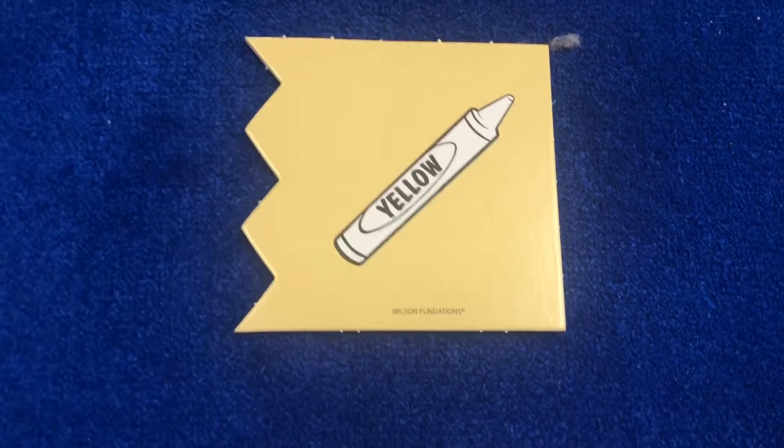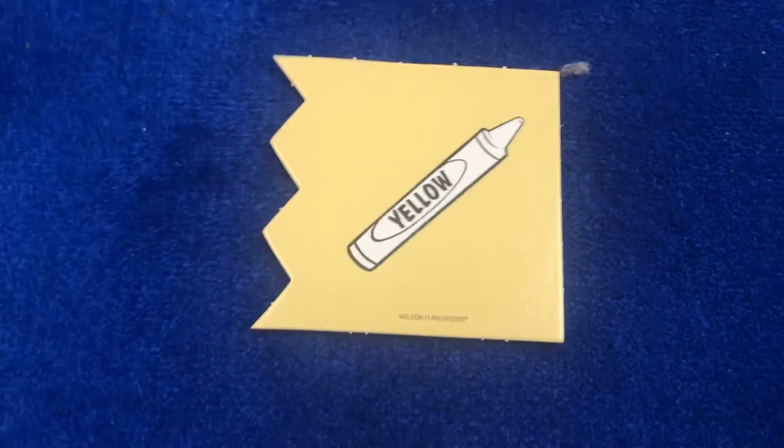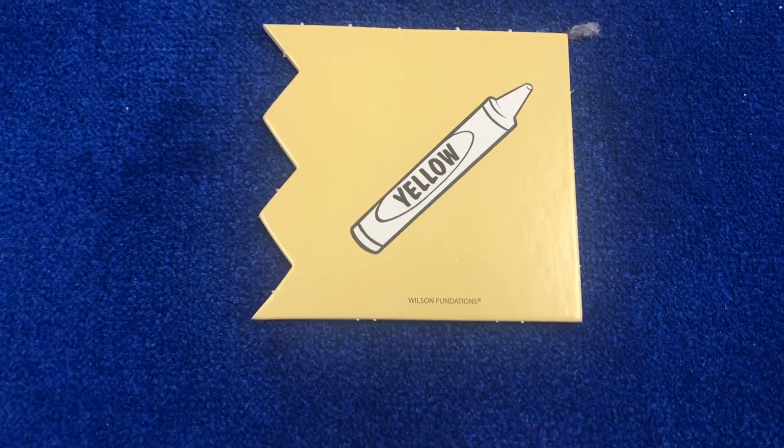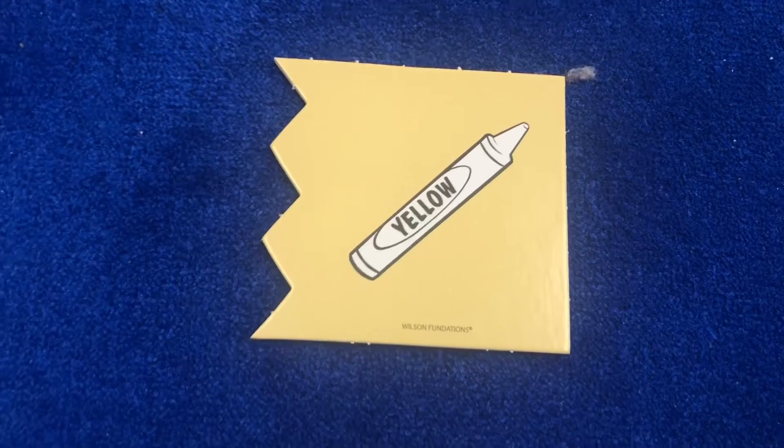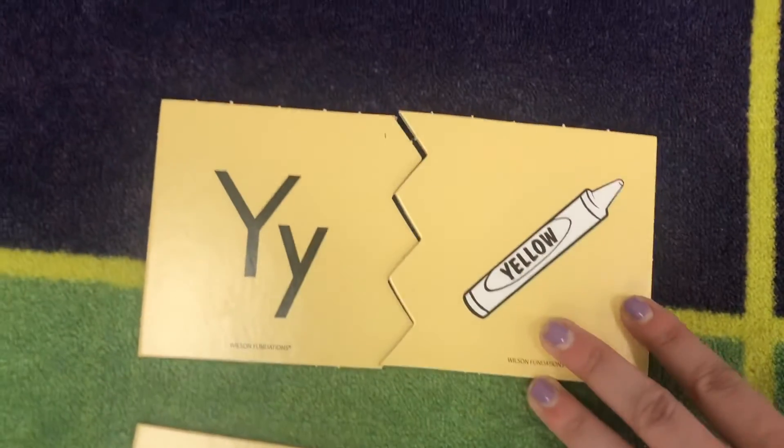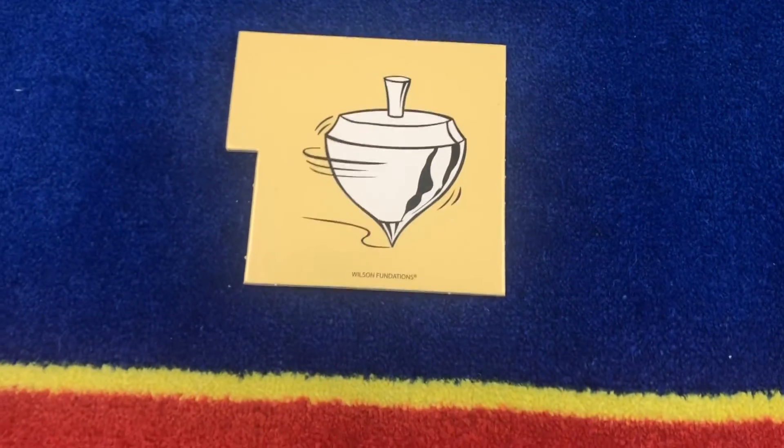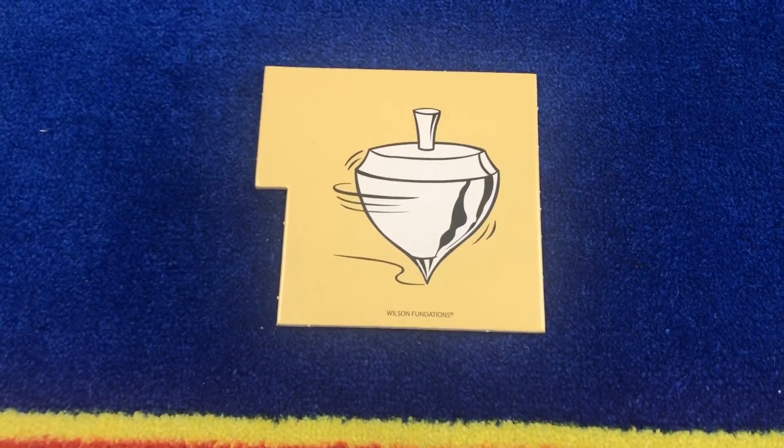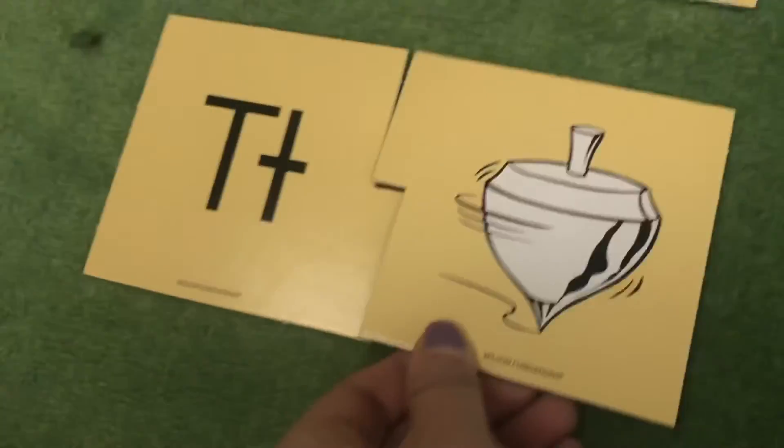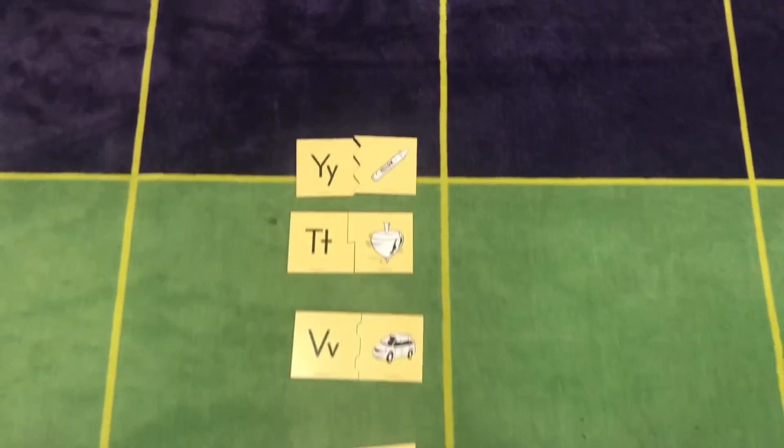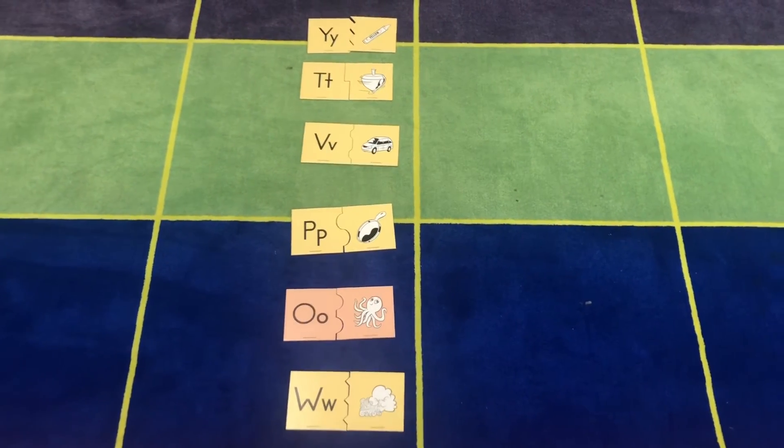This is a yellow crayon because it has yellow on the title. What does yellow start with? Y. So it is a Y. Y, yellow. This is a picture of a top. What does top start with? T is correct. T, top. Good job on our lesson today, guys.